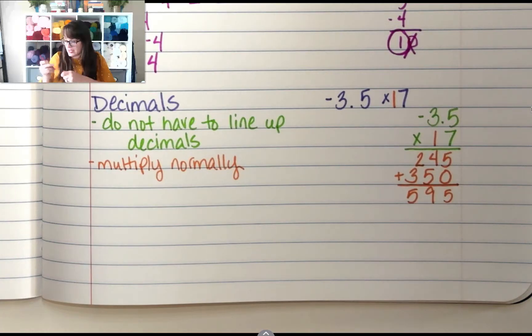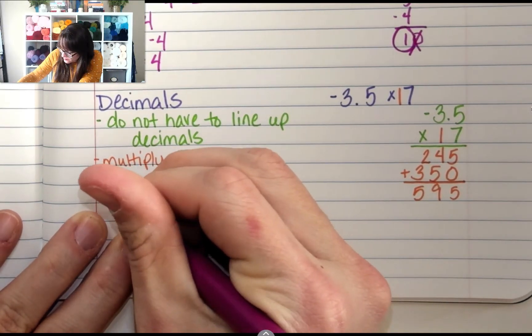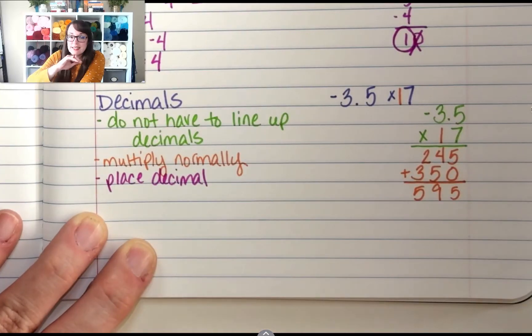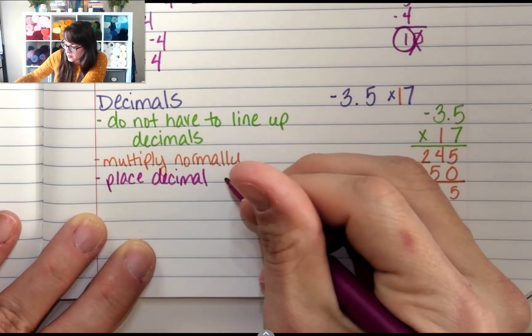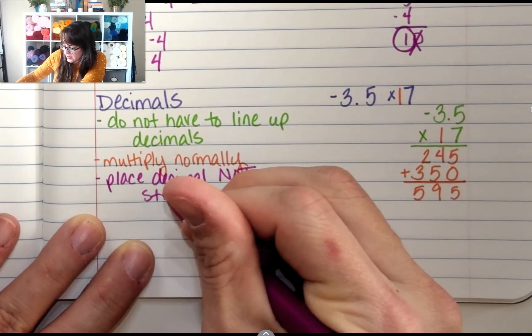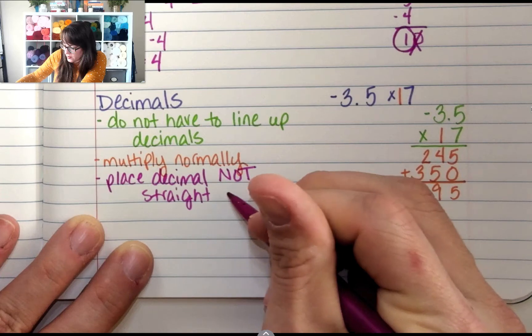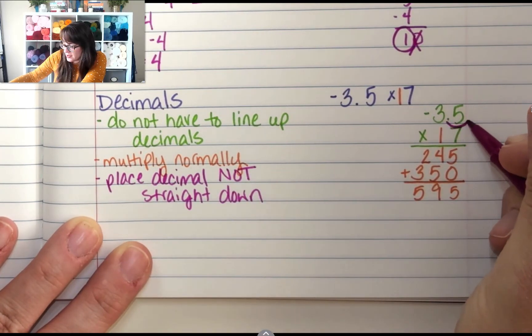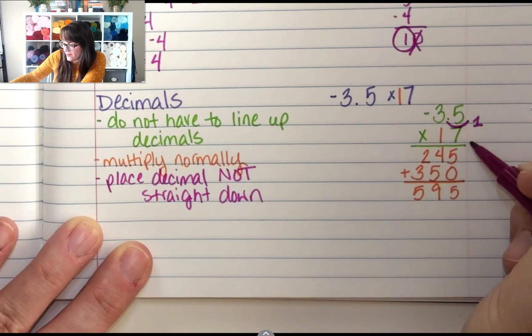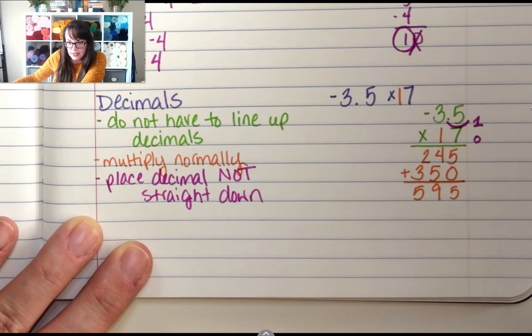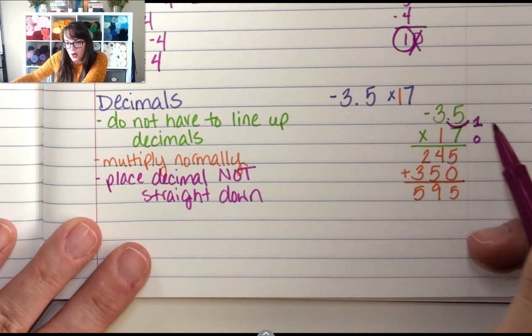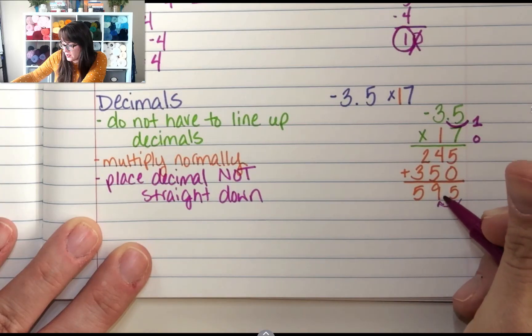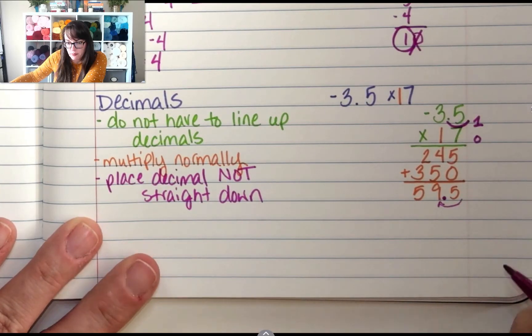It does not go straight down. Not straight down. So this, I have 1 decimal place. And this one, I have 0 decimal places. So in my answer, I need 1 decimal place. So I'm going to start here, and I go over 1. So it's 59.5.